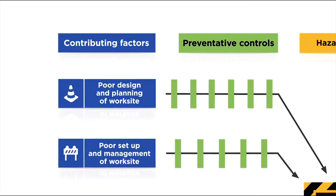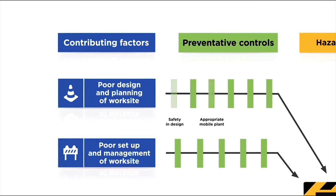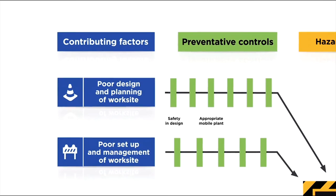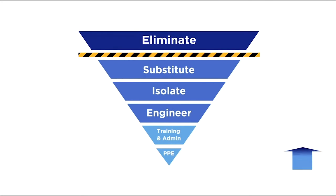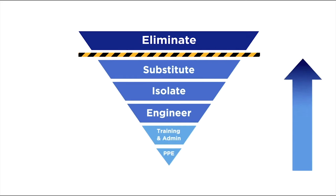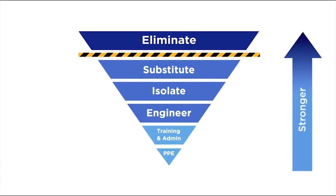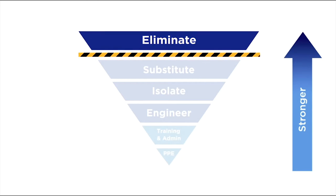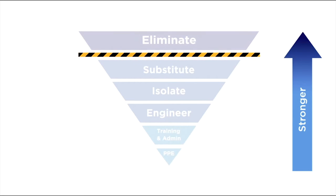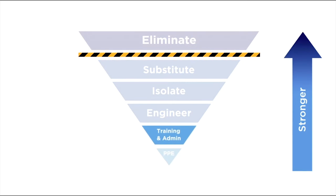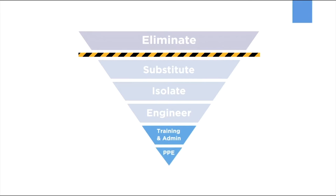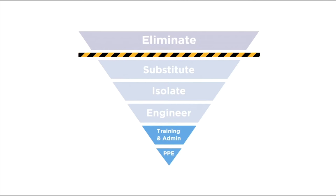Today we will look at controls in detail. Having the right controls in place is what keeps everyone safe. The hierarchy of controls shows the order in which controls should be prioritized to achieve the best safety outcome. Always seek to eliminate a hazard or risk first. If it cannot be eliminated then higher order controls should be chosen from the hierarchy: substitution, isolation, engineering. Training and admin controls and PPE are considered lower order controls and ideally should be used together with stronger controls.